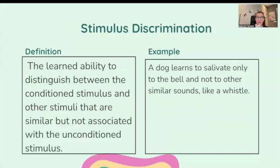Stimulus discrimination: the learned ability to distinguish between the conditioned stimulus and other stimuli that are similar but not associated with the unconditioned stimulus. For example, a dog learns to salivate only to the bell and not to other similar sounds, like a whistle.